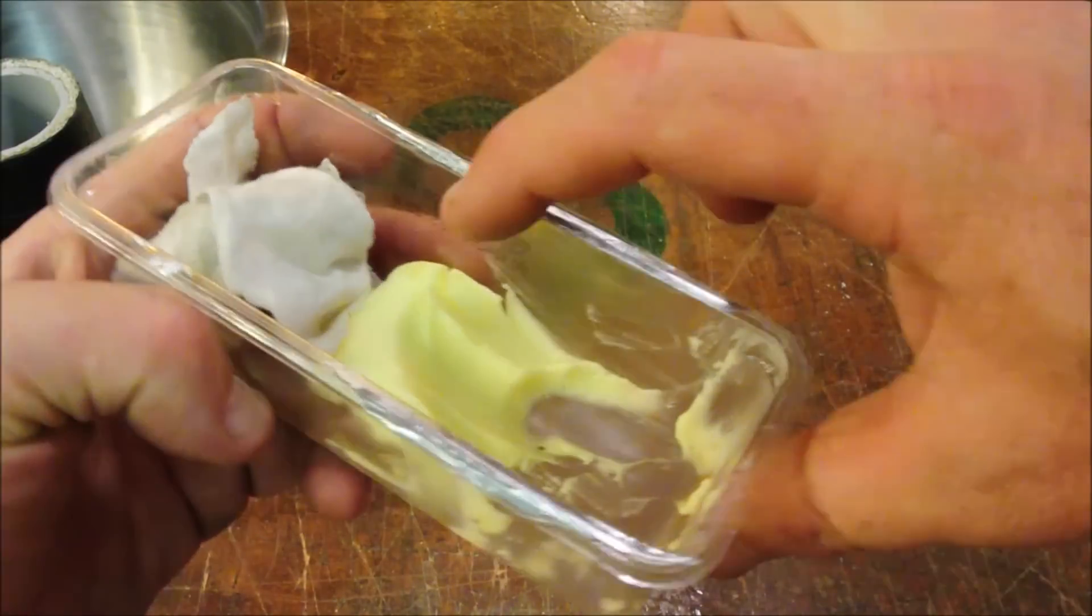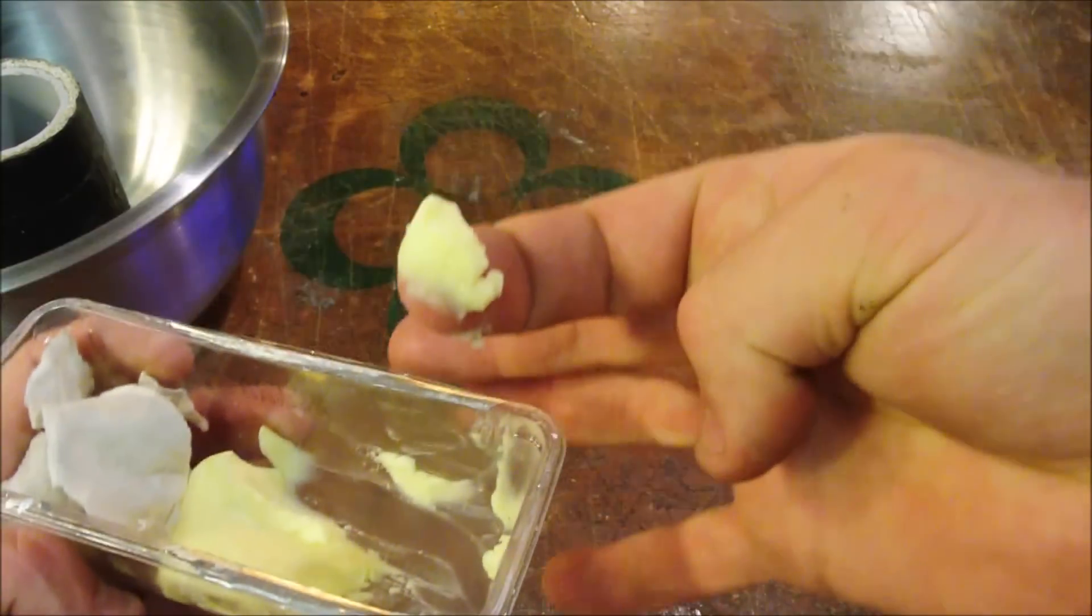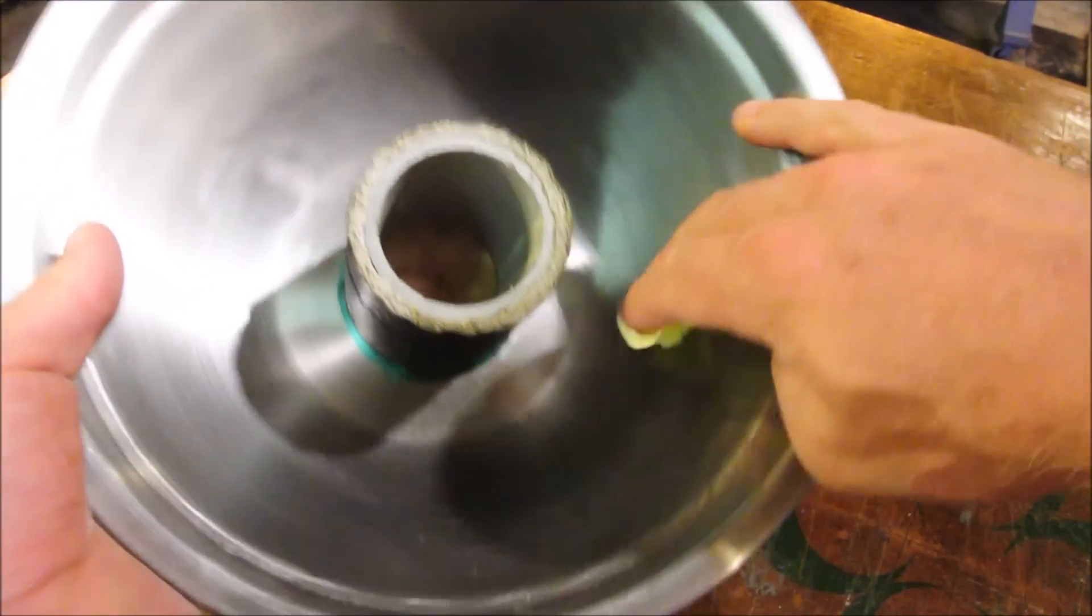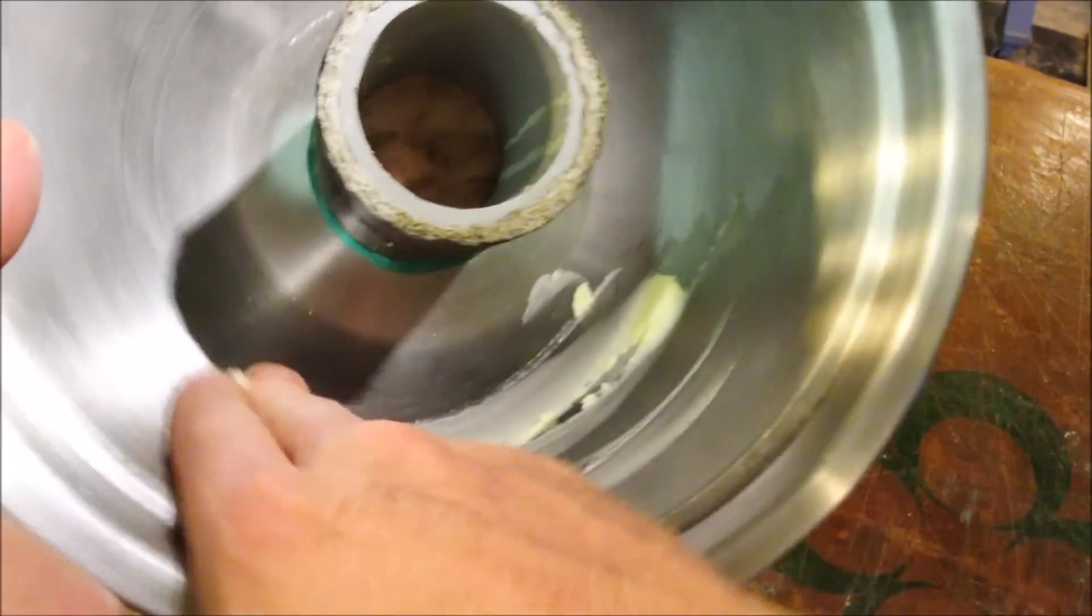And finally, some vegetable shortening. Best mold release ever. Coat the whole thing.